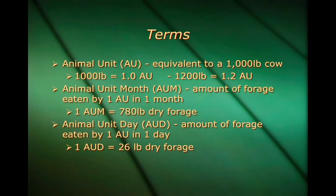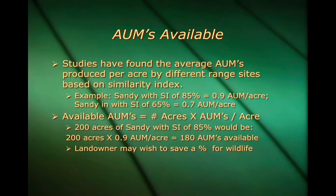Animal unit month, or AUM, is the amount of forage eaten by one AU animal in one month. In this case, 1 AUM is also equal to 780 pounds of dry forage. We could also use animal unit day, or AUD — that's the amount of forage eaten by one AU in one day, or 26 pounds of dry forage.